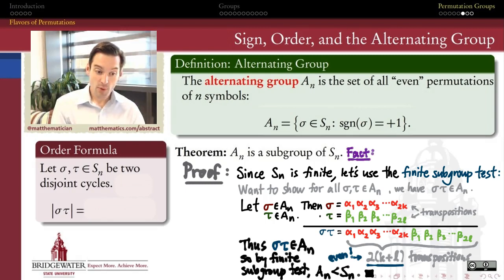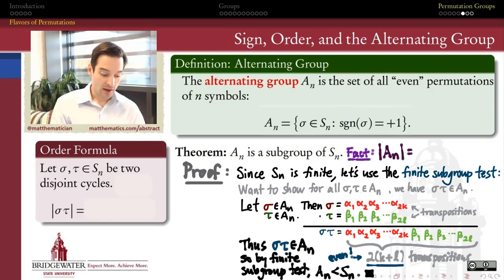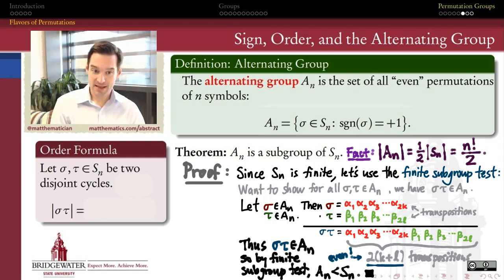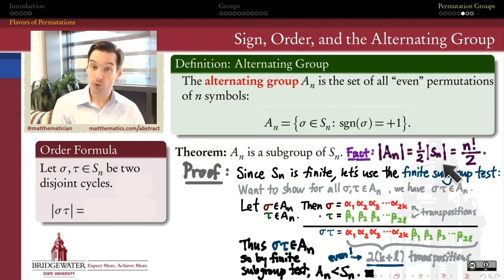In fact, we can say more. We can quickly show that there are exactly as many even permutations as there are odd permutations inside S_n. That means there are exactly half as many even permutations as there are permutations in general. So the order of the subgroup A_n is half the order of the whole group S_n — that is, one-half of n factorial.